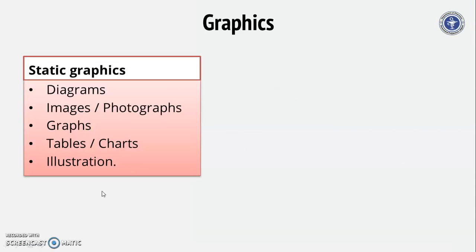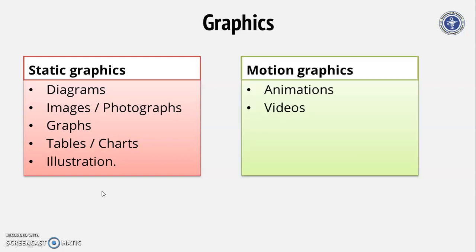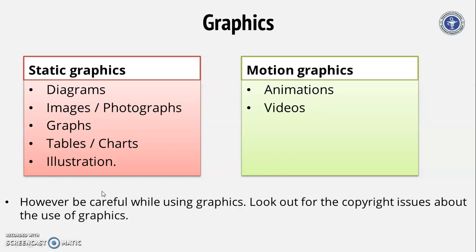There are two types of graphics. The first is static graphics, which are diagrams, images, or photographs. In motion graphics, you can see things like animation, simulations, and videos. However, be careful while using graphics — look out for copyright issues. Every search engine will allow you to choose graphics which are copyright free; use them. In case you use a graphic, visual, or a sentence from any other place, please don't forget to give the reference at the end of the page or slide. That will be a good practice to follow and people who see your presentation will appreciate it.